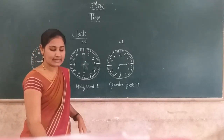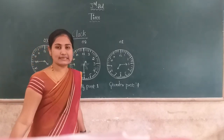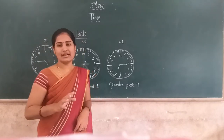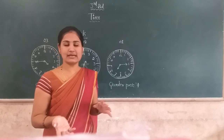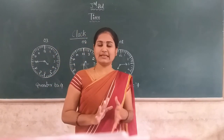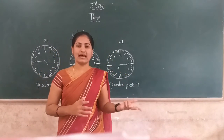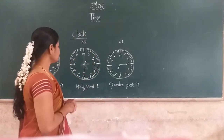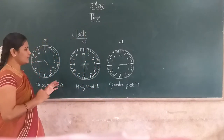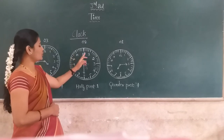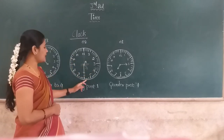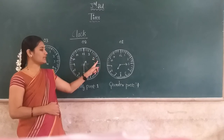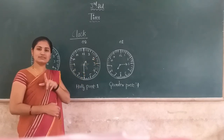Like this, we can read the time by seeing the clock with the different positions of the long hand and the short hand — that is the minute hand and the hour hand. Dear students, the clock face has a total of 60 short lines. One short line indicates one minute.